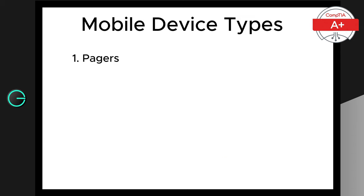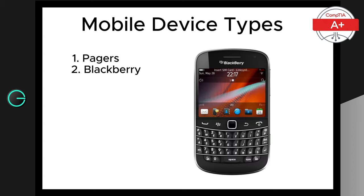Next we have BlackBerrys. These devices were incredibly popular in the early 2000s, especially in the business world. BlackBerrys were known for their physical keyboards and secure email capabilities. Although their popularity is gone, BlackBerrys were pioneers in mobile email and messaging.